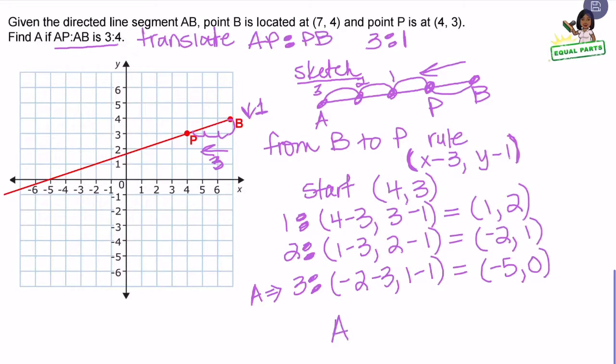So A is located at negative five and zero. I can use the slope to help me find the three additional points. I can start at point P and go down one unit and to the left three units until I get to point A.